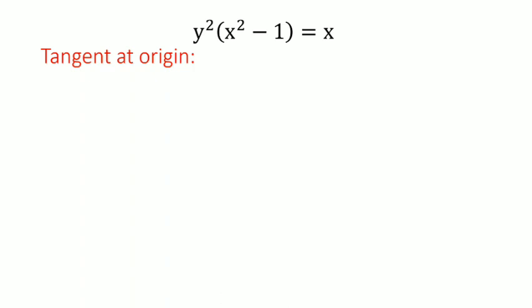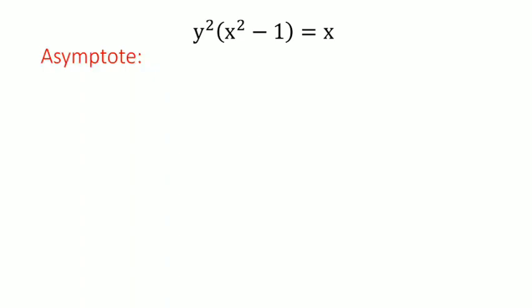Next, we will find the tangent at the origin. To find the tangent at the origin, we first find the lowest degree term in the equation, which is x. We equate this lowest degree term with 0, so we get x = 0, that is the y-axis, which is the tangent to the curve at the origin.